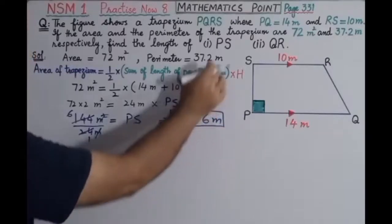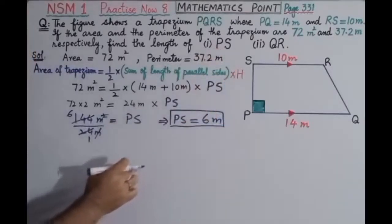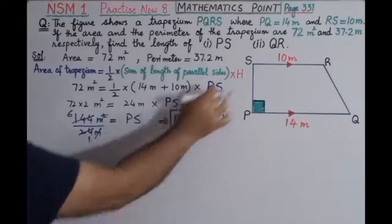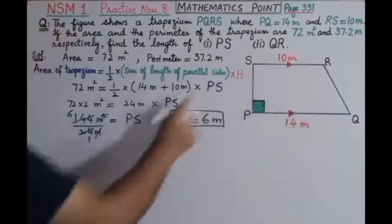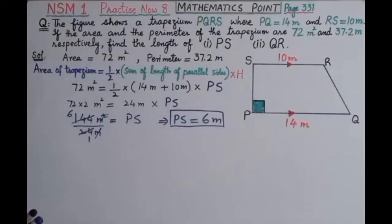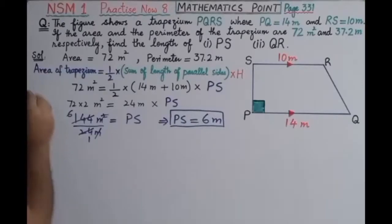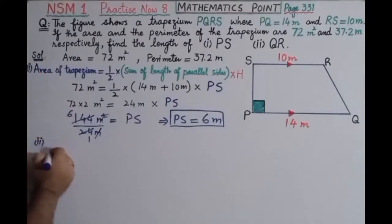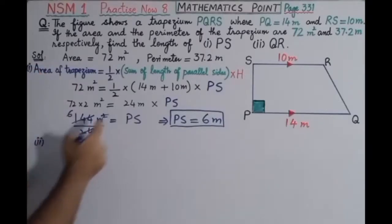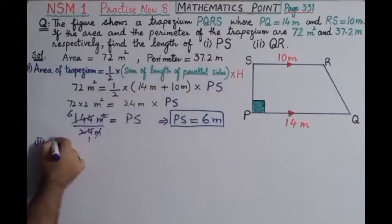So PS equals 6 meters is the answer to Part 1. Now for Part 2, we will find the length of QR.